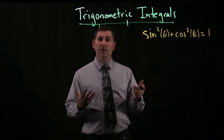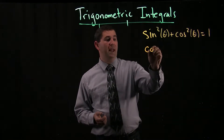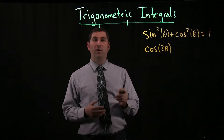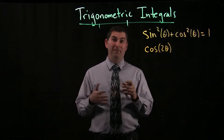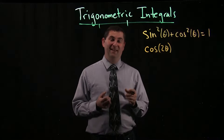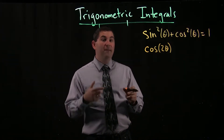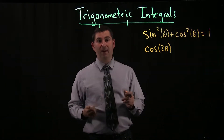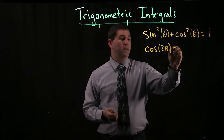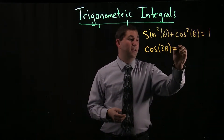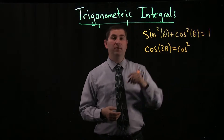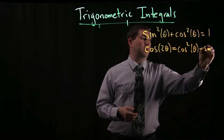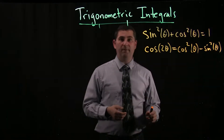First, you need to recall the so-called double angle formula for cosine. The double angle formula for cosine is sometimes written down in one of maybe three ways. We're going to write it down one way, and then I'll show you how you get the other two ways from the Pythagorean identity. The base way — this is the way I remember — is that the cosine of two theta equals cosine squared minus sine squared of theta.